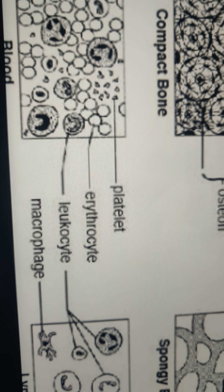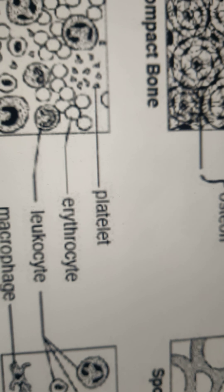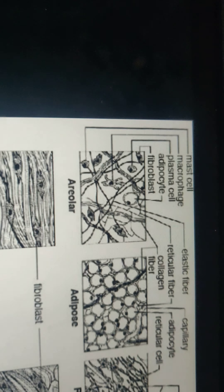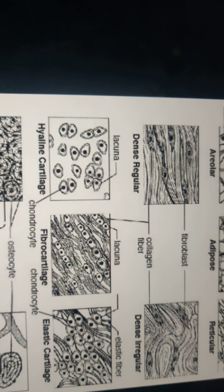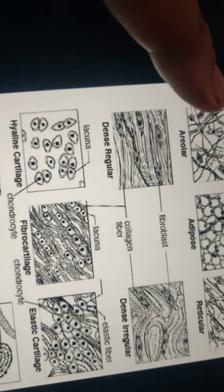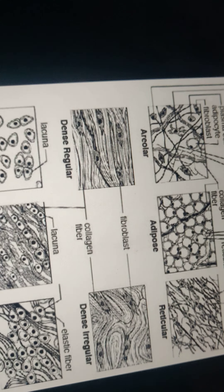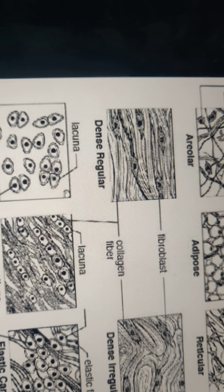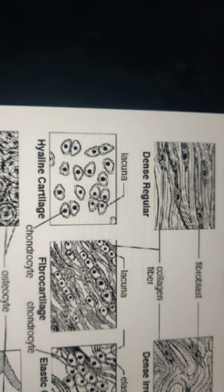Mast cells also have a defense mechanism role and are generally found under the loose connective tissues — for example, the areolar connective tissue is a loose connective tissue where mast cells are seen. Mast cells can also be found in the liver, spleen, and blood vessels. So connective tissues are associated with all these cell types: mast cells, macrophages, fibroblasts, fat cells, and leukocytes.